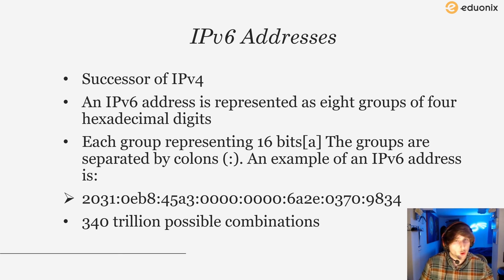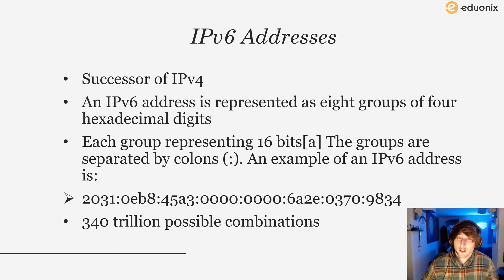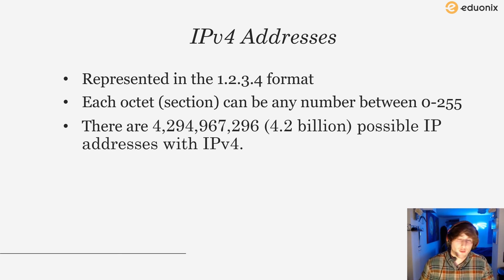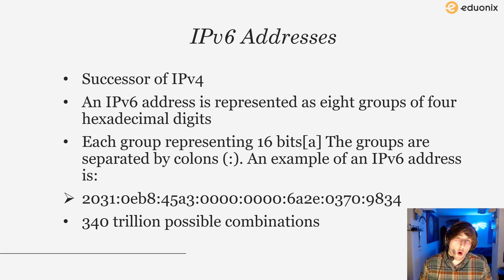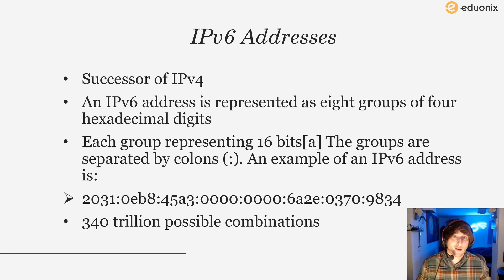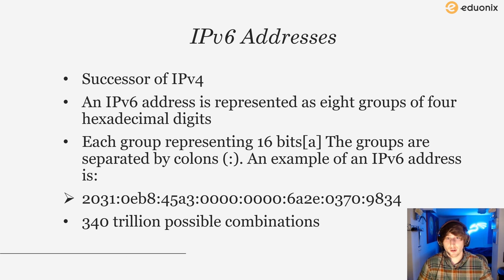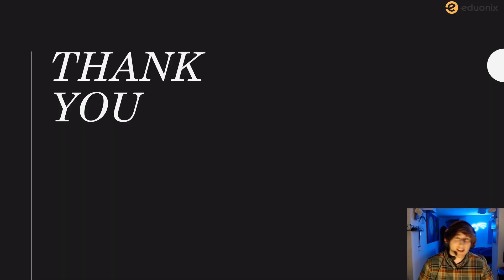The real benefit of IPv6 addresses is that there are 340 trillion combinations. Compare that to IPv4's 4.3 billion, and you can already see the value. As our need for unique identifiers has expanded, we need a system that expands as well, and that is what IPv6 is meant to do. That is a glimpse into IP addresses — thank you for joining me in this video and I'll see you in the next one.